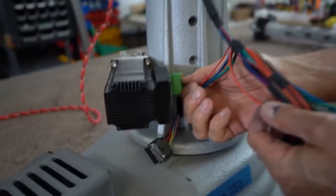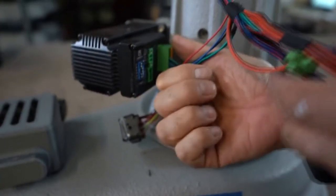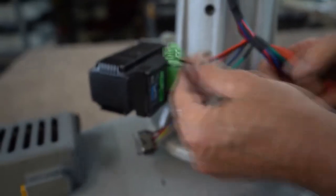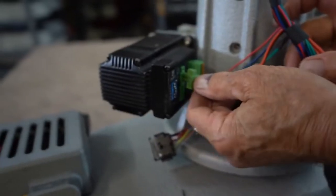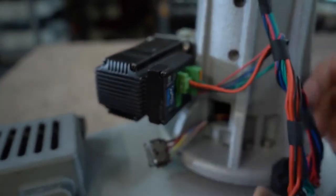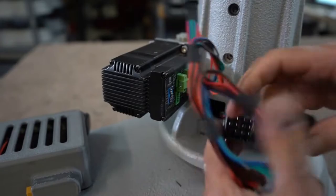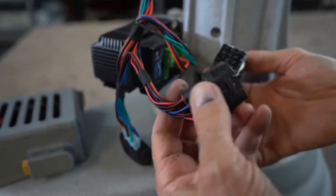Next we will plug in the connectors for the Z-motor. Make sure that it is seated in all the way. Next is the main connector for the machine.